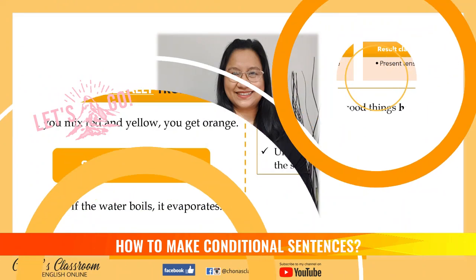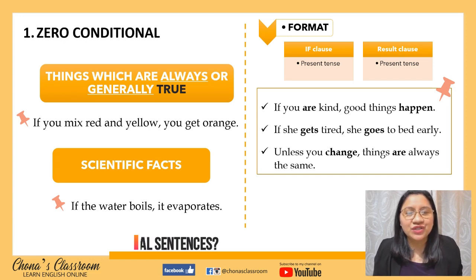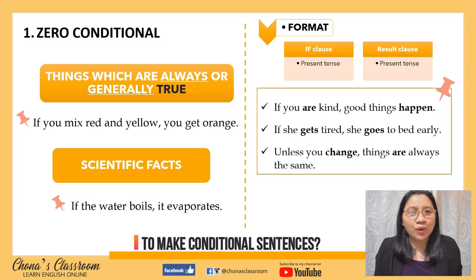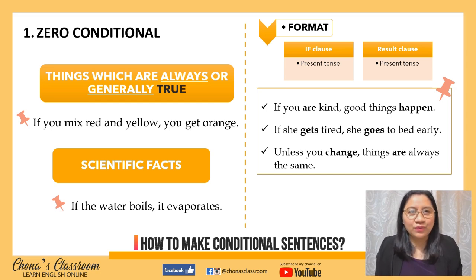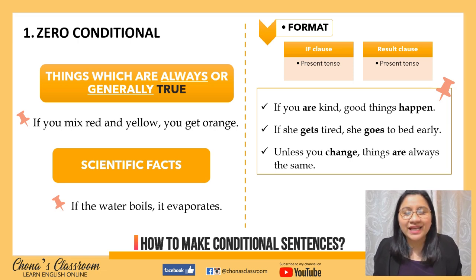The first type of conditional is the zero conditional. The zero conditional is used to express when things are always or generally true. For example: 'If you mix red and yellow, you get orange.' It is also used to express scientific facts. For example: 'If the water boils, it evaporates.'